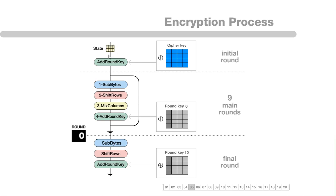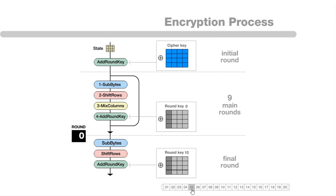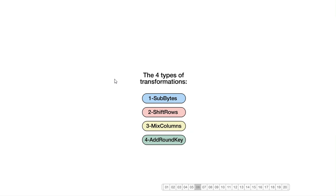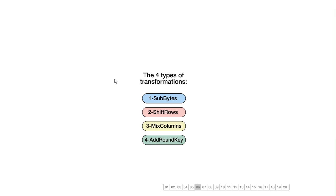Turn your attention to this state matrix here. Nine main rounds of operation and a final round — so after 10 rounds of operation, you get your ciphertext. Your state matrix goes as input into your algorithm. A few operations happen for nine rounds, then the final round, and you have your ciphertext. Fundamentally, there are just four transformations: sub-bytes, shift rows, mix columns, and add round key. The order in which they happen slightly varies.